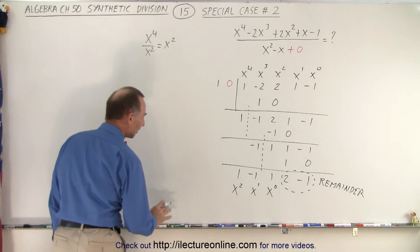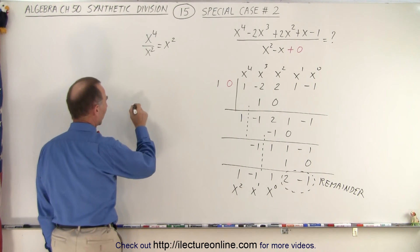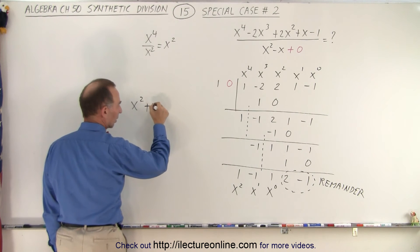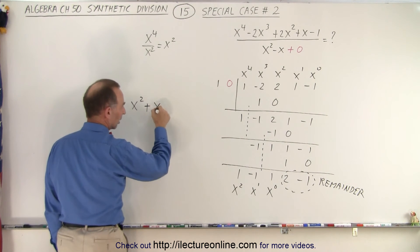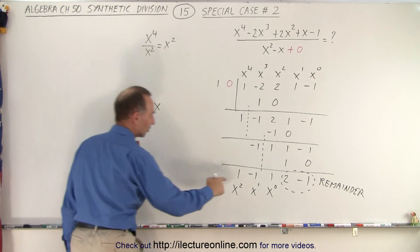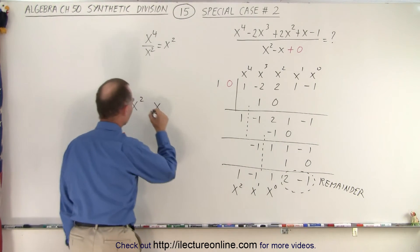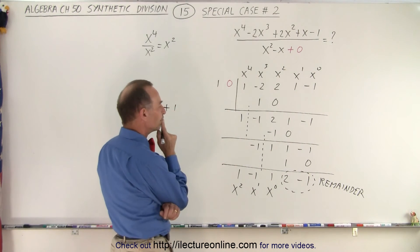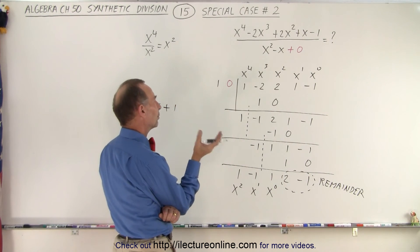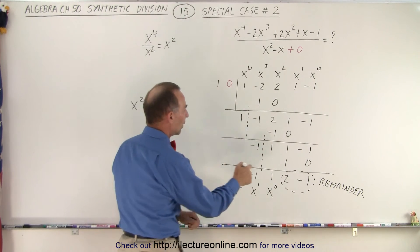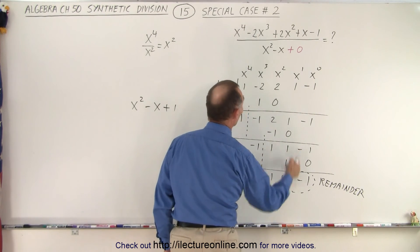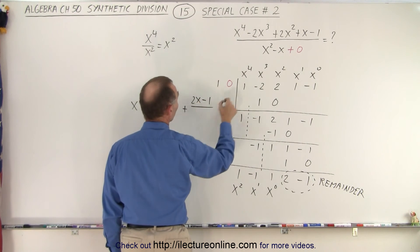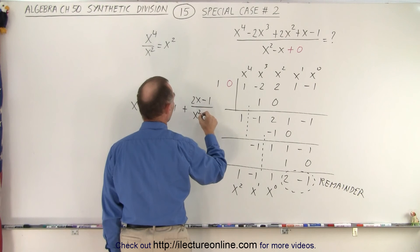So what do we have left? We have left the following. We have x squared plus x, plus 1x, oh no, minus x because there's a minus here. So x squared minus x plus 1. With a remainder, what does the remainder represent? Well the remainder represents a 2x minus 1 over the denominator. So that would be plus 2x minus 1 over the denominator of x squared minus x.